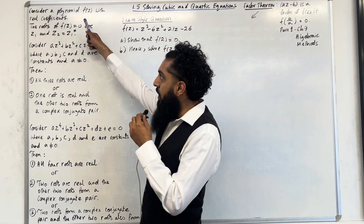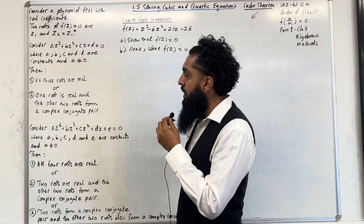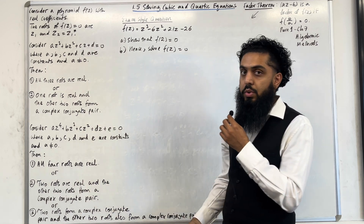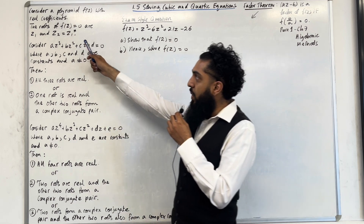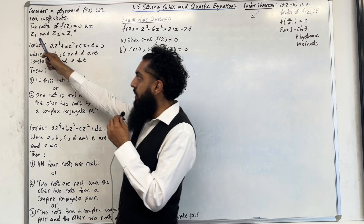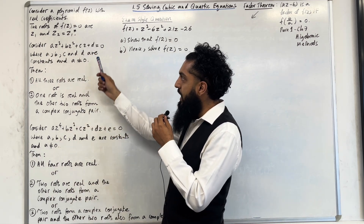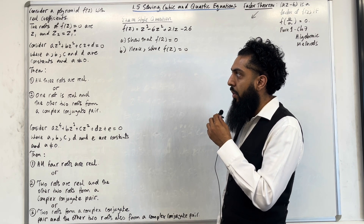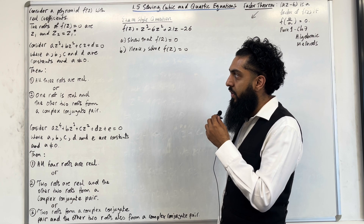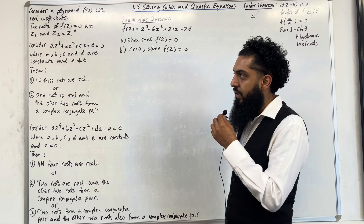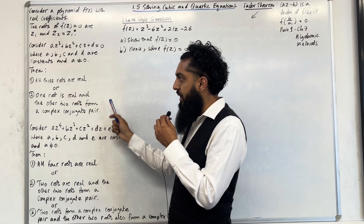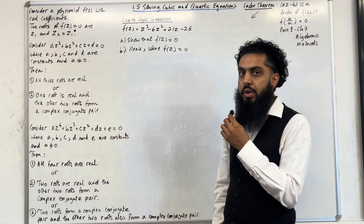Consider a polynomial f of z with real coefficients. The roots of f(z) = 0 are z1 and z2, where z2 is equal to z1 star — the complex conjugate of z1. Consider az³ + bz² + cz + d = 0, where a, b, c and d are constants and a ≠ 0. Then there are two possibilities: all three roots are real, or one root is real and the other two roots form a complex conjugate pair.